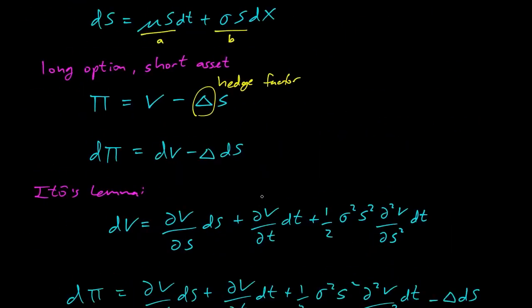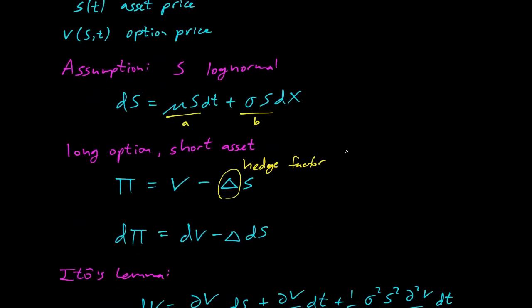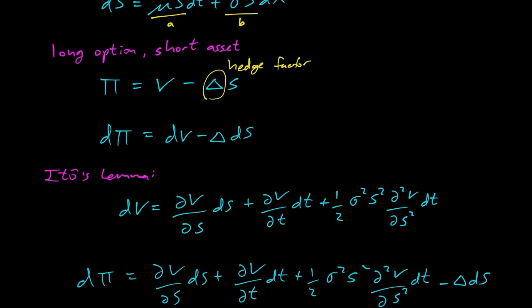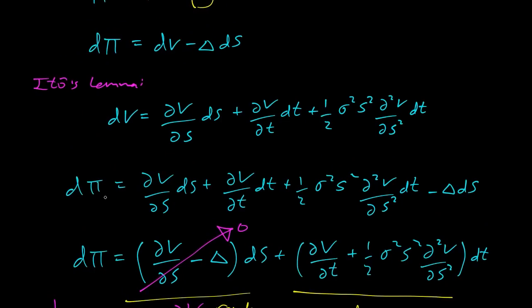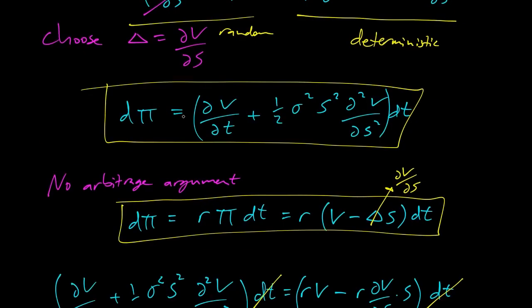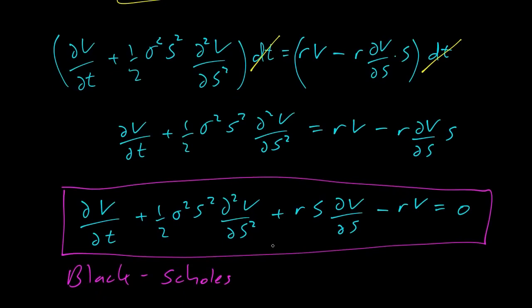Let's review: we started with the asset and the option, assumed the asset follows a log normal random walk, took a position long the option and short some quantity of the asset, applied Ito's Lemma to get d-pi, then chose delta to eliminate the random part. That gives a deterministic d-pi. By no-arbitrage, this equals money in the bank. Set them equal, substitute, divide by dt, group terms, and you have Black-Scholes. Pretty neat.